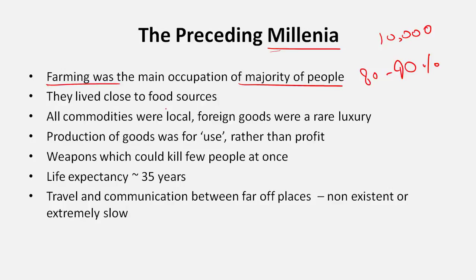People lived close to their food sources; almost everyone lived on their farms and cities were very small. There was hardly any transportation network to move food from villages to cities. Whatever cities did develop were mostly in fertile plains where food could be relatively easily transferred. That is why all major Indian cities of the ancient period are mostly in fertile plains.